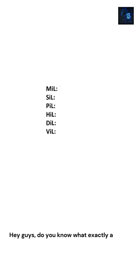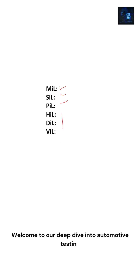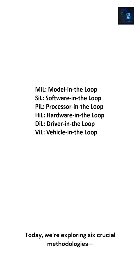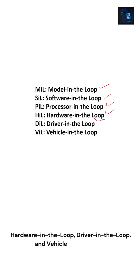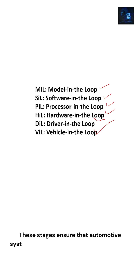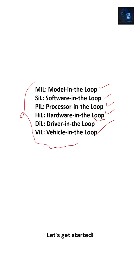Hey guys, do you know what exactly are MIL, SIL, PIL, HIL, DIL, and VIL testing methods in automotive? Welcome to our deep dive into automotive testing. Today we are exploring six crucial methodologies: Model in the Loop, Software in the Loop, Processor in the Loop, Hardware in the Loop, Driver in the Loop, and Vehicle in the Loop. These stages ensure that automotive systems are safe, reliable, and cutting edge before hitting the road. Let's get started.